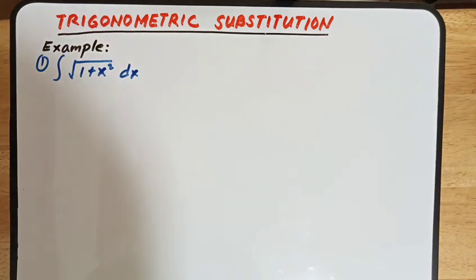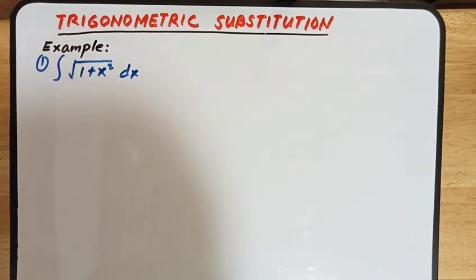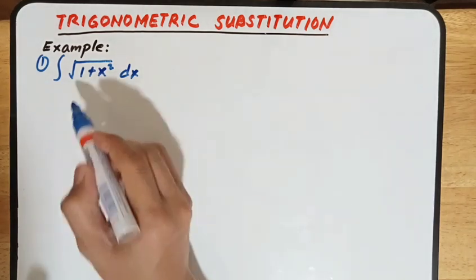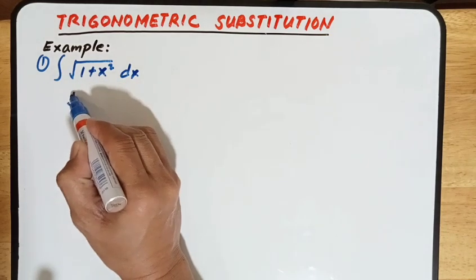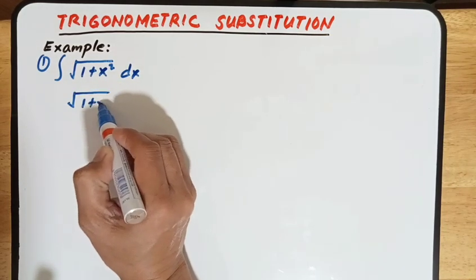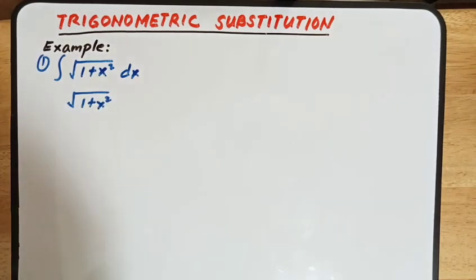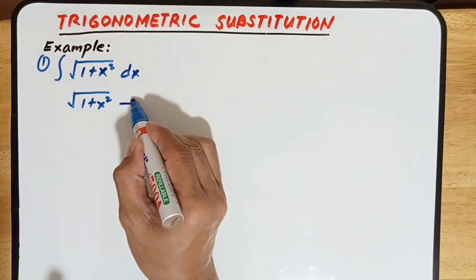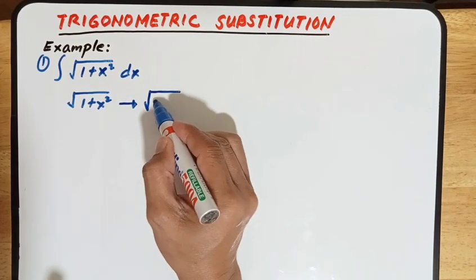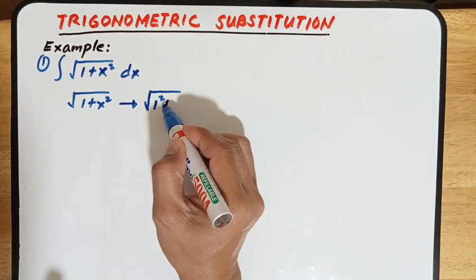If this is given in your exam and if we try the different procedures, we can say that those procedures we had discussed cannot be applied. But if you look at this part, this square root of 1 plus x squared is just the same as the square root of 1 squared plus x squared.